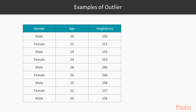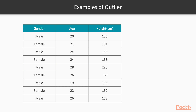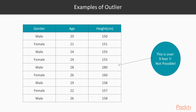Here I have three columns: gender, age, and height. So you have gender — male, female, etc. — and age values like 20, 21, 24, 28. This is just dummy data. Next I have height in centimeters: 150, 151, 153, and so on. One outlier you can easily recognize is a male aged 28 with a height of 280. Now, 280 centimeters is over 9 feet. It is not possible for any human to have a height over 9 feet in normal day-to-day life. So this is definitely an outlier — abnormally high compared to other values in the data set.